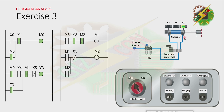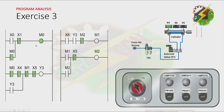And now, because the cylinder is at fully extended position, it will cause M2 to turn off. And Y3 to turn off also. Then Y3 will turn on again, and the cycle will repeat unless M0 is off. The only way to turn off M0 is by pressing PB2, or X1.